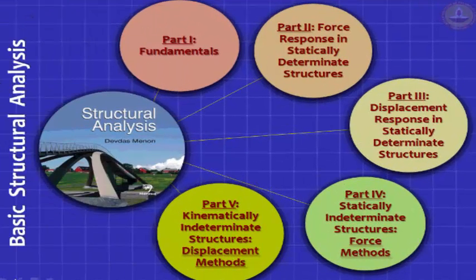There are basically five parts to the book. The first part deals with fundamentals. The second part deals with the force response in statically determinate structures. The third part deals with displacement response in statically determinate structures. The fourth part deals with statically indeterminate structures, which are more common in practice, done by the force methods. Part 5 deals with kinematically indeterminate structures and displacement methods. The slope deflection method belongs to this fifth part.